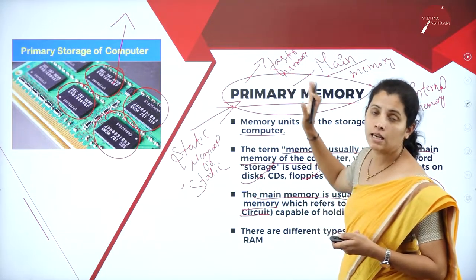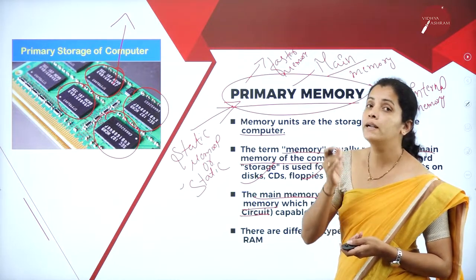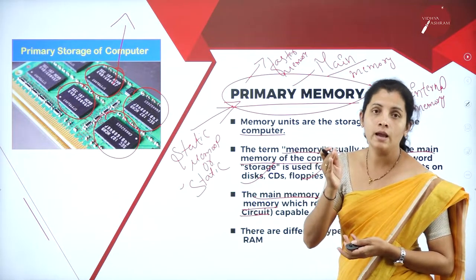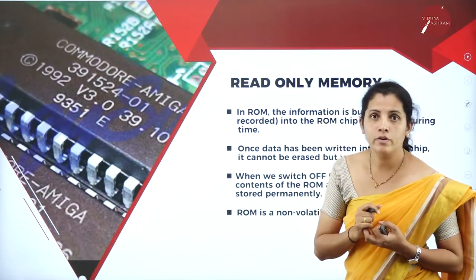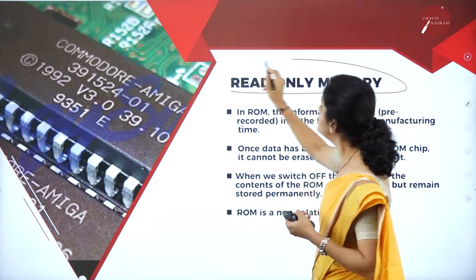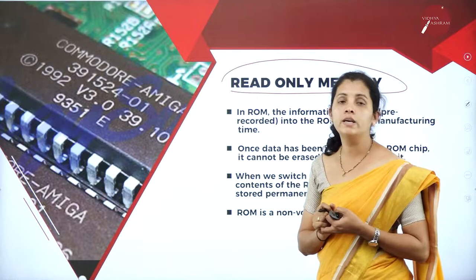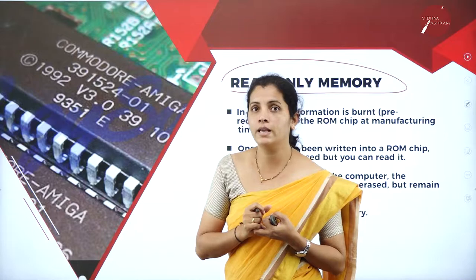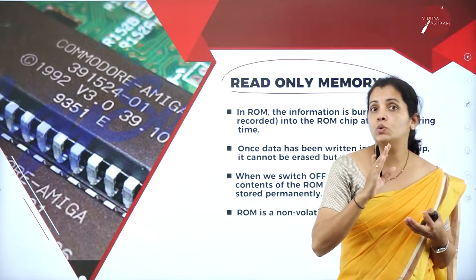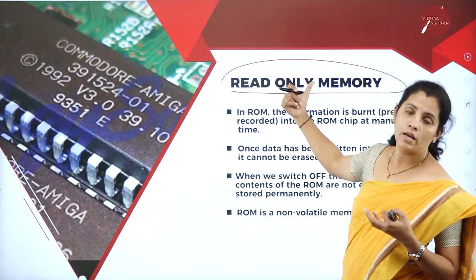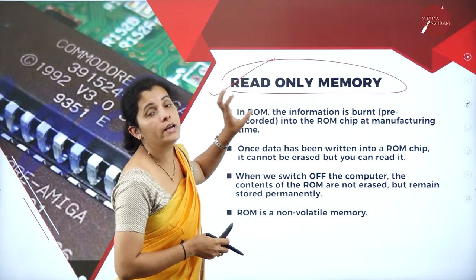Primary memory is classified into two types: read only memory and random access memory. In today's session, I am going to discuss read only memory, and in my next session I will discuss random access memory. Read only memory is made by using semiconductor. It is responsible for reading the data, but you cannot write data onto read only memory — the name itself indicates you can read but not write.